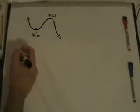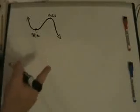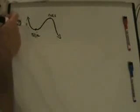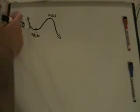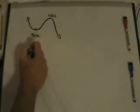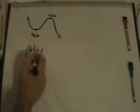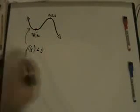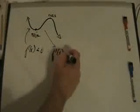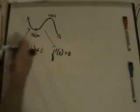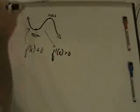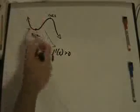Remember that your first derivative is the same thing as the slope of your tangent line. On this side of the curve, I have a negative slope, so the first derivative is less than zero. At this other point, my first derivative is greater than zero — it's increasing. When your first derivative changes signs from negative to positive, then you have a minimum.